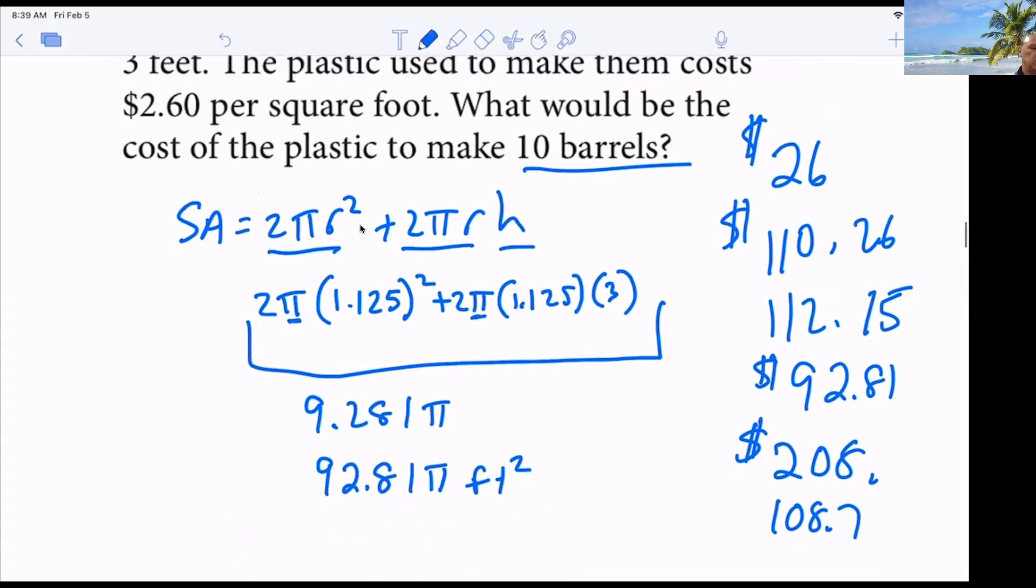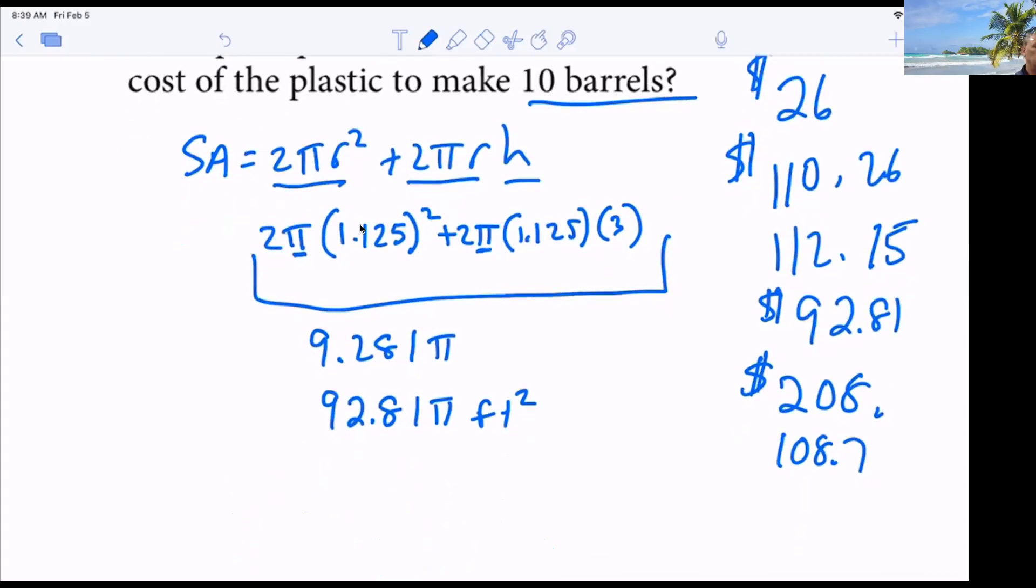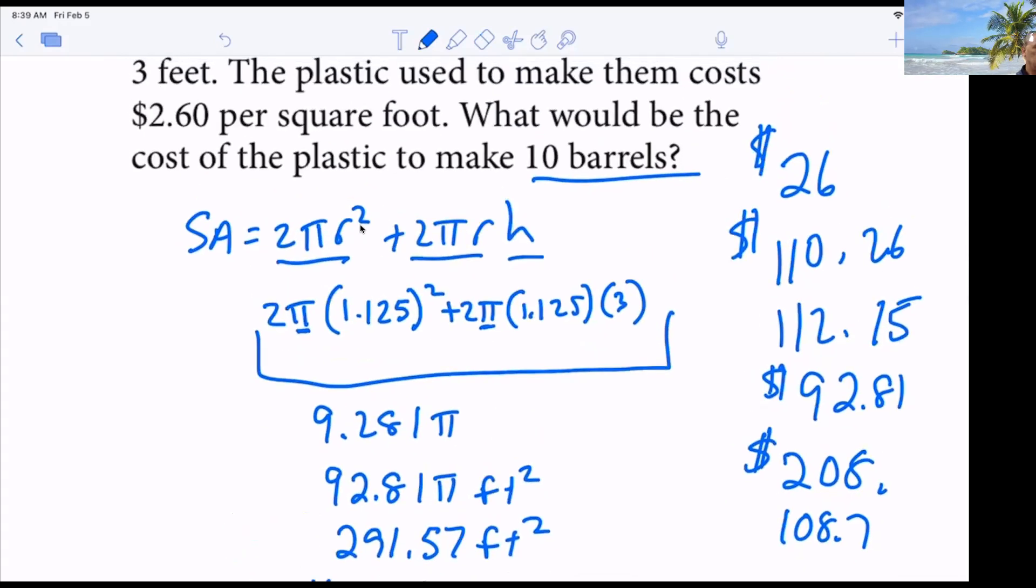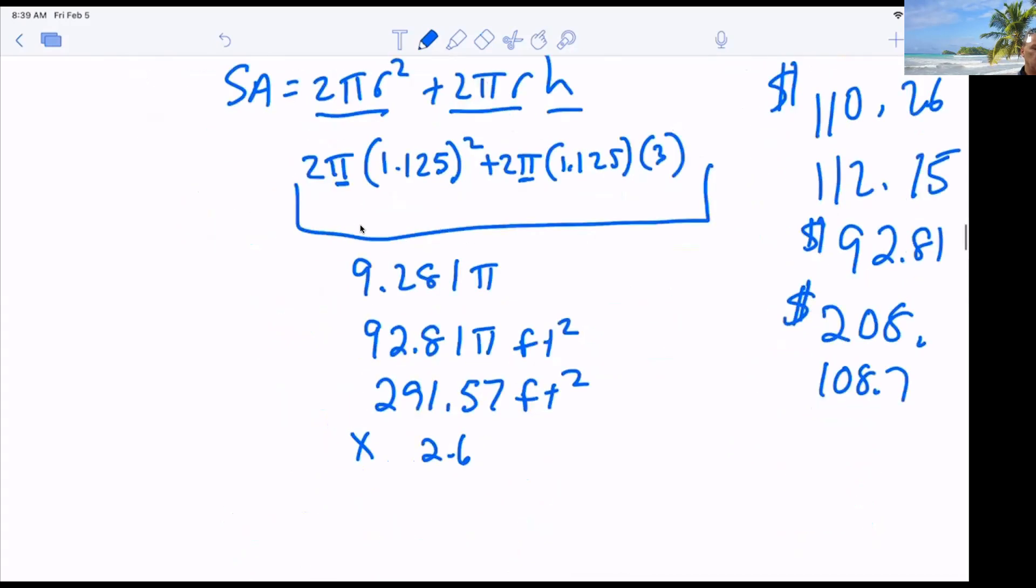291 point what? Five, seven square feet, right? Then multiply that by 260 because that's how much it costs per square foot. And what is that? Is that what we said? Seven 58 point what? 09 because we're rounding to pennies. All right. Sam's got a problem. Go. How many barrels are there? All right. Anybody else? Right? Anybody else? All right. Wow, I didn't think that was that hard. All right, here we go.